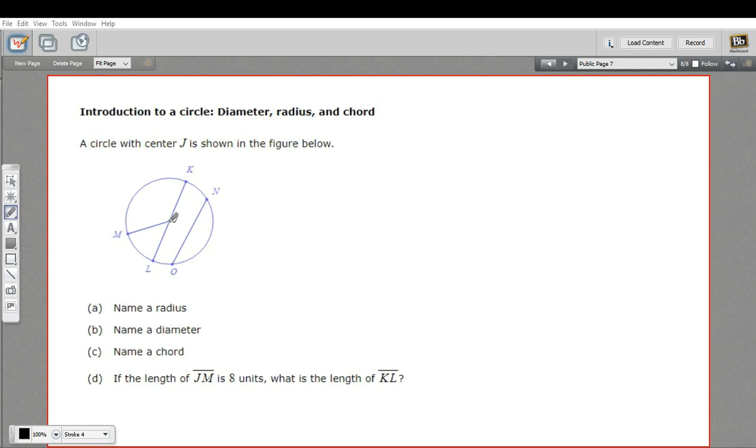There's the center, this point right in the middle. That's a very crucial part of a circle. And then there are some lines, different types of lines, that go from the outside of a circle either all the way across or to the center.